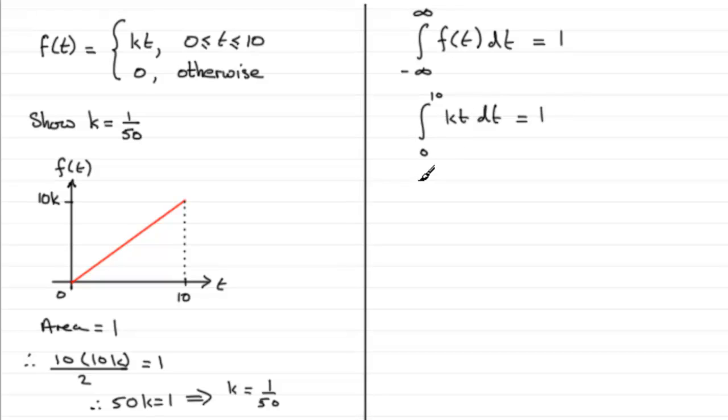And if we integrate this, we therefore have k times t squared over 2. You could put the 2 here, and then you've got your limits going between 0 and 10. And this will equal 1.